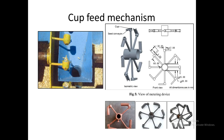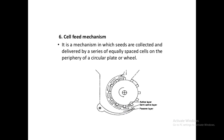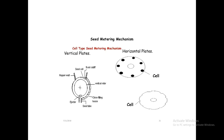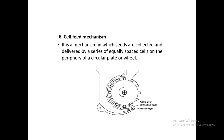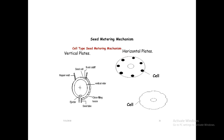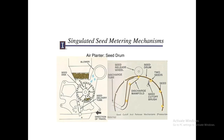In the cell feed mechanism, cells are placed on the periphery of a rotating disc connected to the shaft; the spacing between cells picks up seeds and drops them into the seed tube. Different plates are used for the cell feed mechanism — both horizontal and vertical plates — and cells can either be in the plate or on the periphery of the plate.